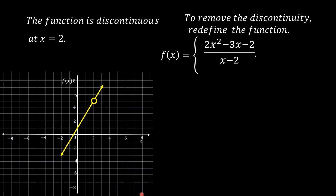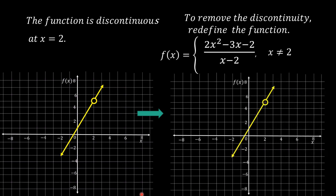Redefine f of x as: f of x equals 2x squared minus 3x minus 2, divided by x minus 2, where x is not equal to 2; and f of x equals 5, where x equals 2. When x is 2, f of x equals 5. This is the graph of the redefined function. There is no more hole at x equals 2, or at point (2, 5).